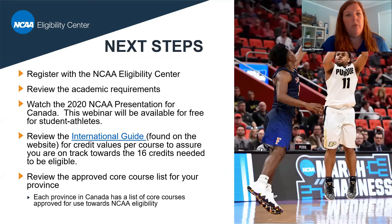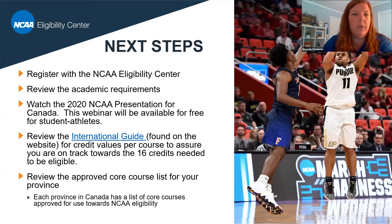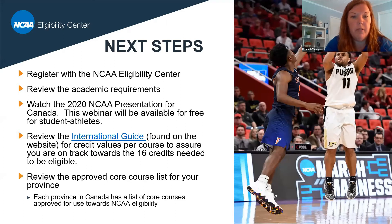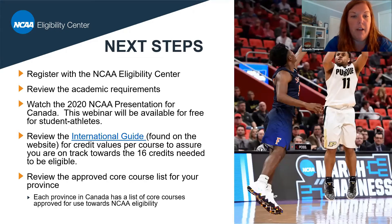Our next step, after registering with the NCAA Eligibility Center, reviewing the academic requirements, and watching this presentation — which will be available for free for all student athletes — is to review the provincial information from the last slide, which can be found in the link here, as well as reviewing your province's list of approved core courses.